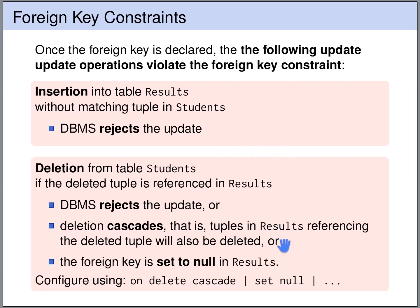It is also problematic if we delete a row from the students table that is referenced from the results table, and there are different options for how the DBMS could react. First, it could reject the update. Second, the deletion can cascade — if we delete a tuple from the students table, all tuples that reference it will also be deleted, and this can cascade further. Third, all references to the deleted row can be set to null. You can configure this in SQL using ON DELETE CASCADE or by setting foreign key references to null.